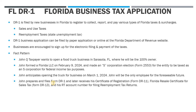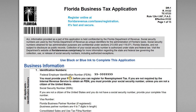John prepares and files the DR-1, and after it's filed he'll get his certificate of registration. He'll get his Florida resale certificate for sales tax so he can purchase inventory without having to pay sales tax, and he'll also get an RT account number — the re-employment tax number he needs to file re-employment returns. Now let's have a look at the application.